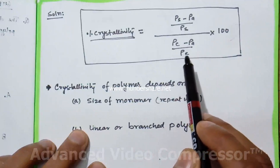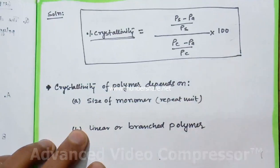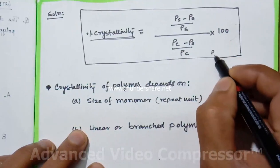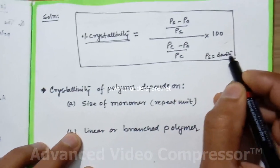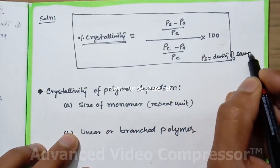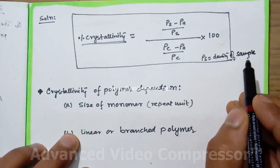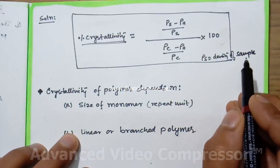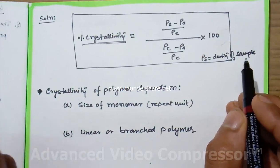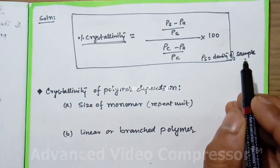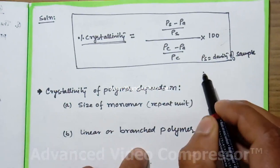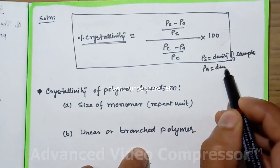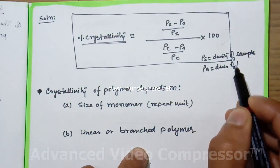Here rho s is density of sample whose crystallinity is to be measured. You have been given a sample with density rho s and you have to determine the crystallinity. Rho a is density of totally amorphous polymer.